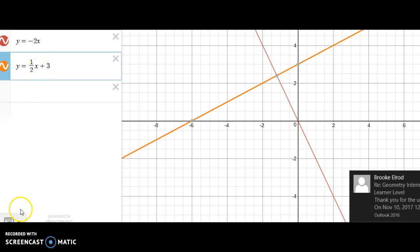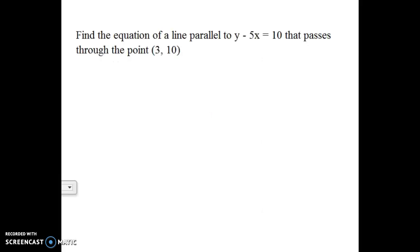So we're going to do one of the questions that was commonly missed on the IA. So this was a question straight from your interim assessment. It says find the equation of a line that is parallel to y minus 5x equals 10 and passes through the point 3 comma 10.